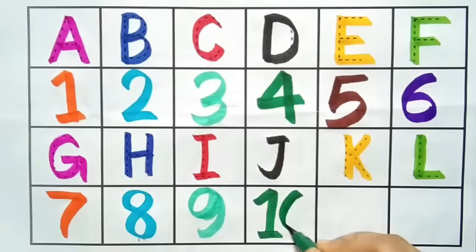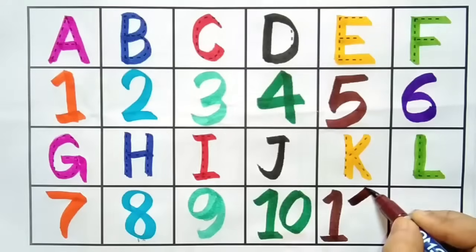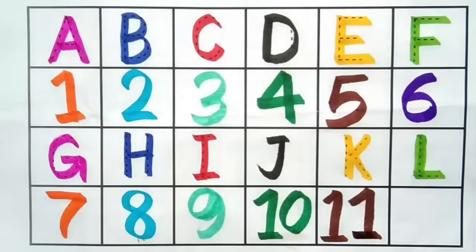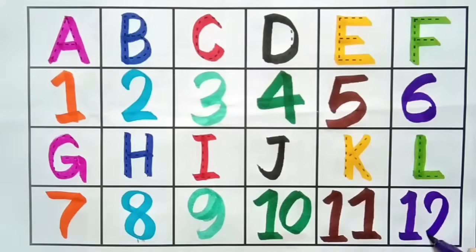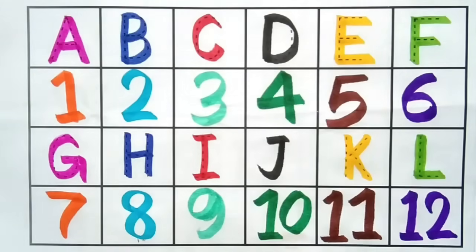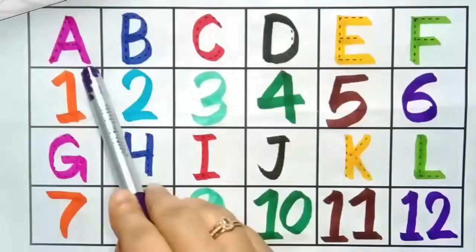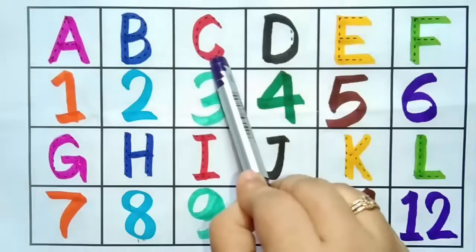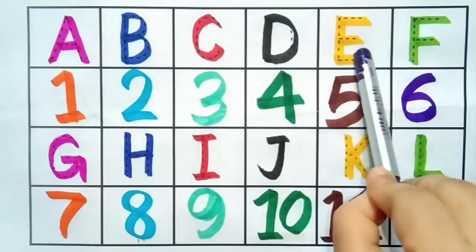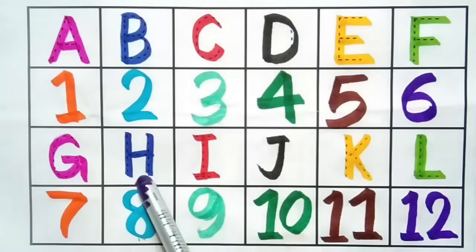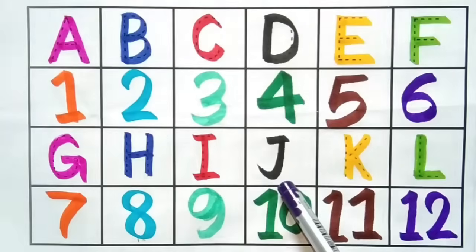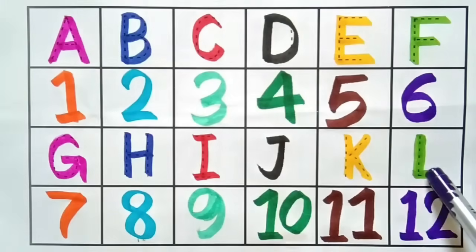Ten, yeh hai number ten. Eleven, yeh hai number eleven. Twelve, yeh hai number twelve. Kids, phir se haam repeat karti hai: A, B, C, D, E, F, G, H, I, J, K, L.